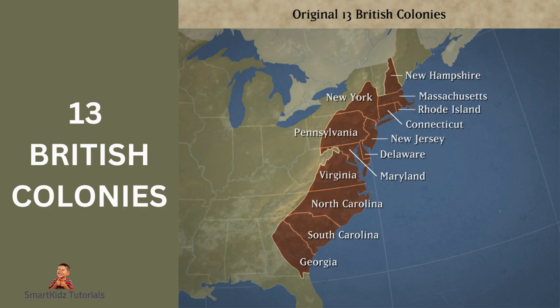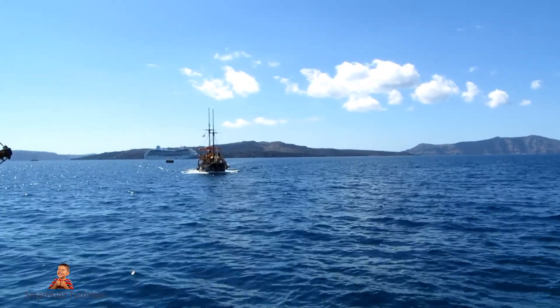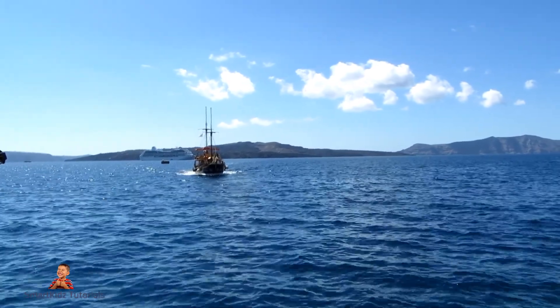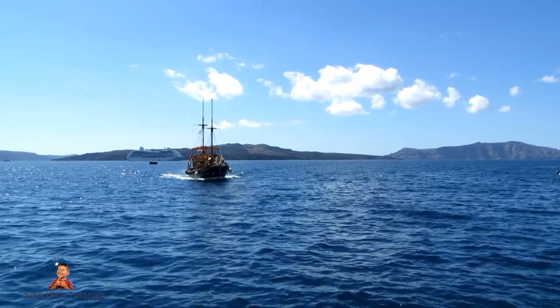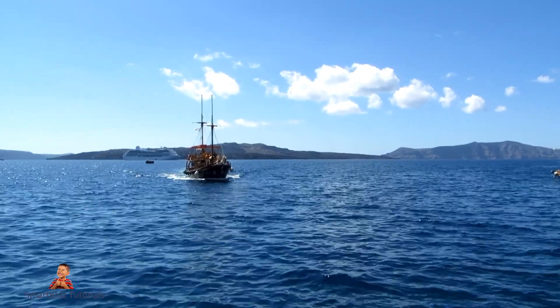The thirteen colonies that eventually formed the United States were Virginia, Massachusetts, New Hampshire, Maryland, Connecticut, Rhode Island, Delaware, North Carolina, South Carolina, New Jersey, New York, Pennsylvania, and Georgia. These colonies were initially established by British settlers who sought economic opportunities, religious freedom, and new beginnings in the New World.